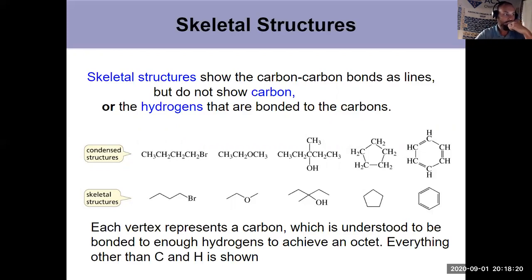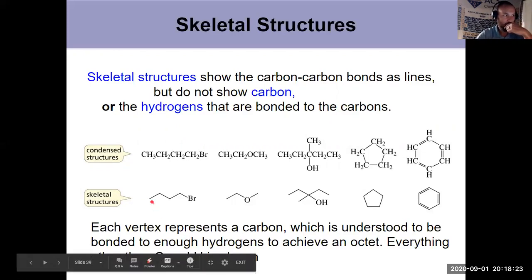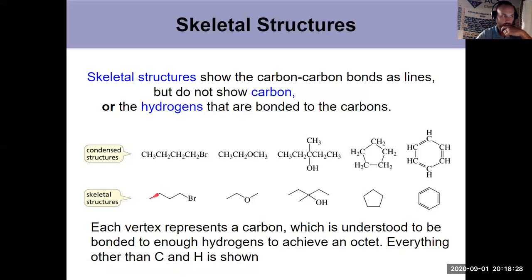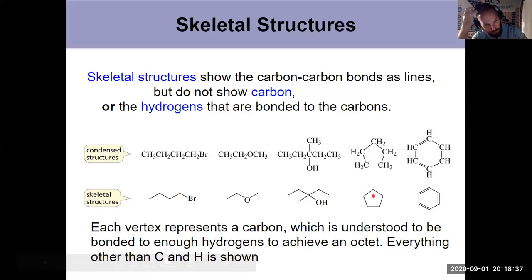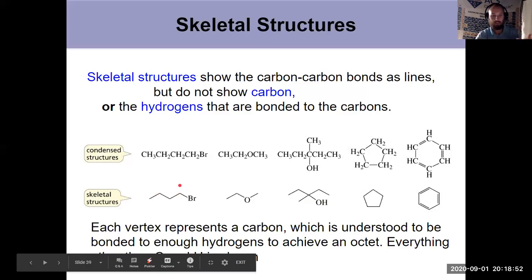Any vertex or any point represents, or any terminus represents a carbon. So there's carbon here, here, here, here. Here, here, and here. Bunch of carbons in there. Five carbons in a ring here. Any of those vertex or termini represent carbon. You have to know that carbon has four bonds. So anything that's not carbon or hydrogen will be shown, like the oxygens or the bromines over here. Anything else that's not shown is just filled in with hydrogen.